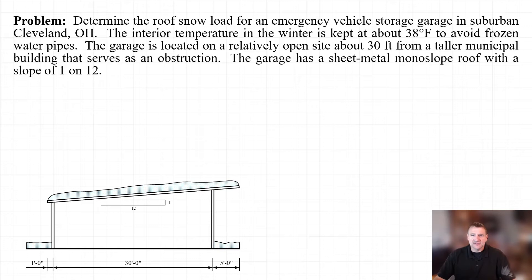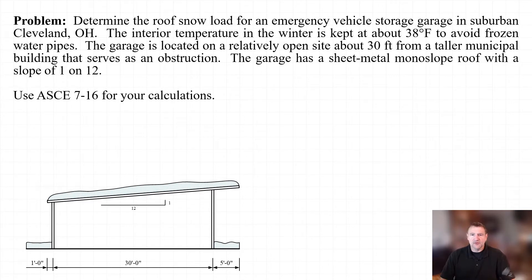The garage has a sheet metal roof with a monoslope and a pitch of 1 on 12. In this example, we will be working from the 2016 edition of the ASCE 7 standard. I should note that there are some major differences between the 2016 edition of the standard and the newer 2022 edition of the standard.